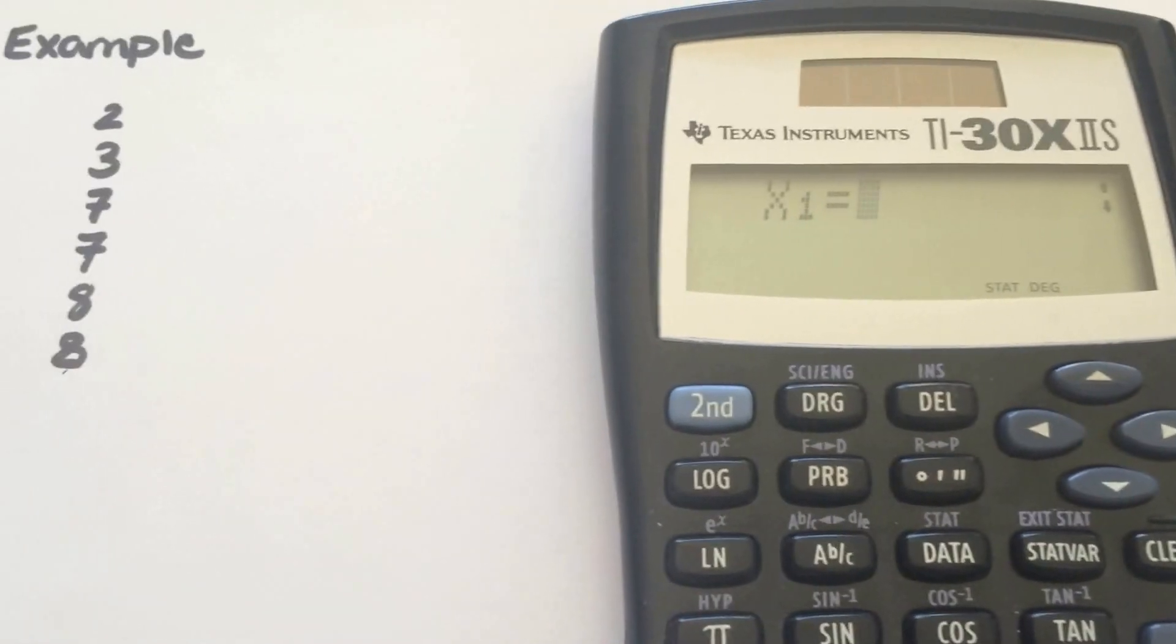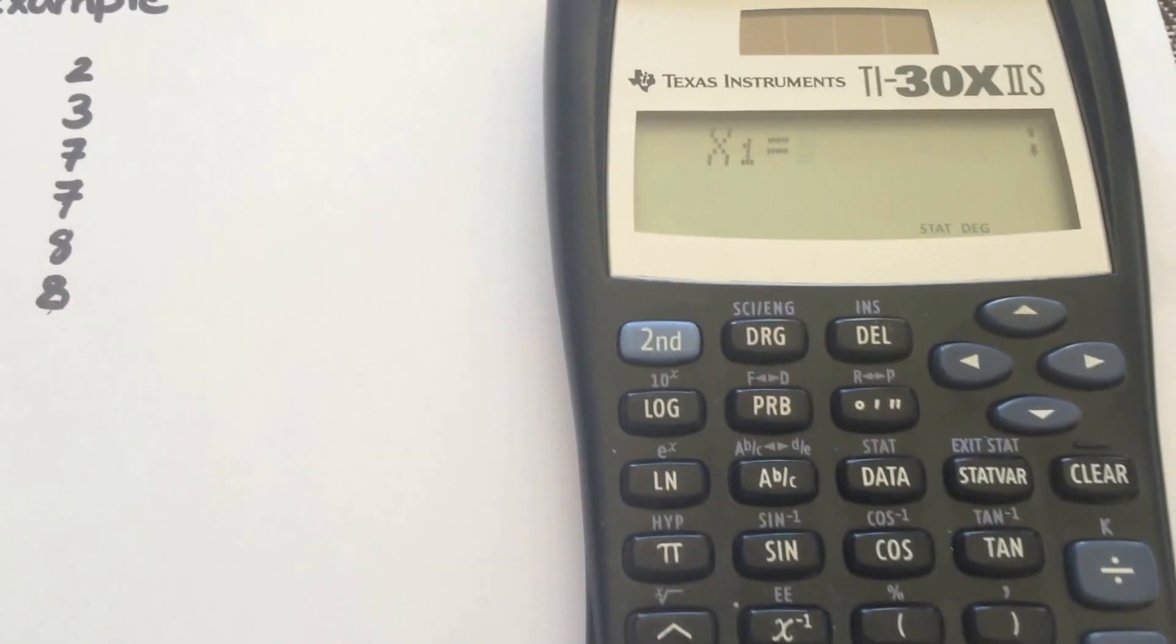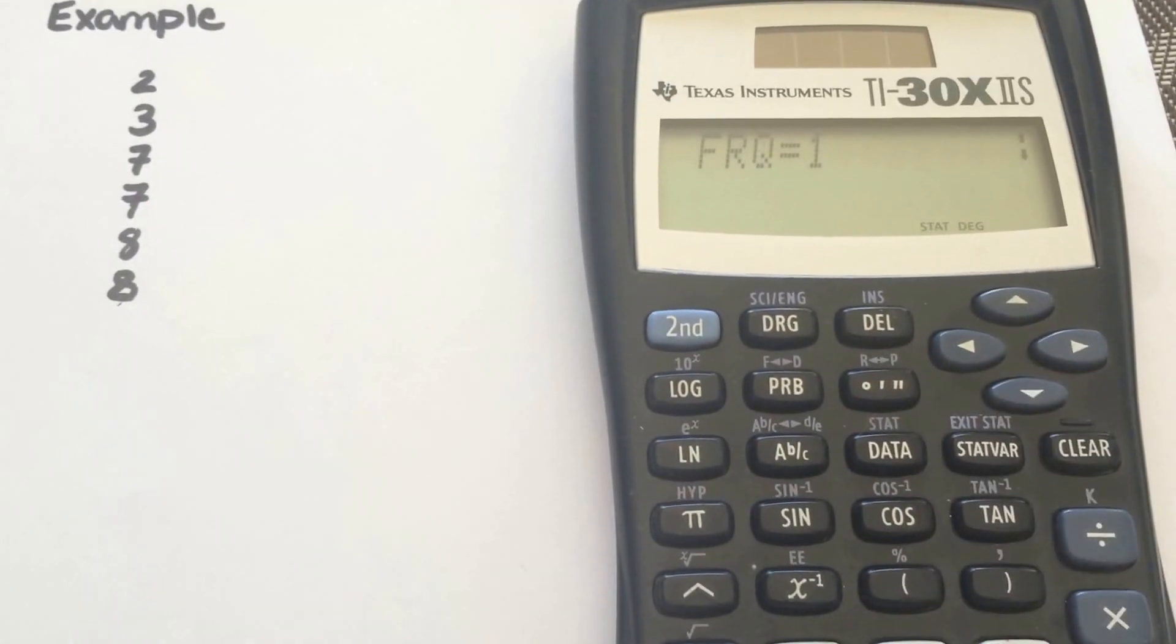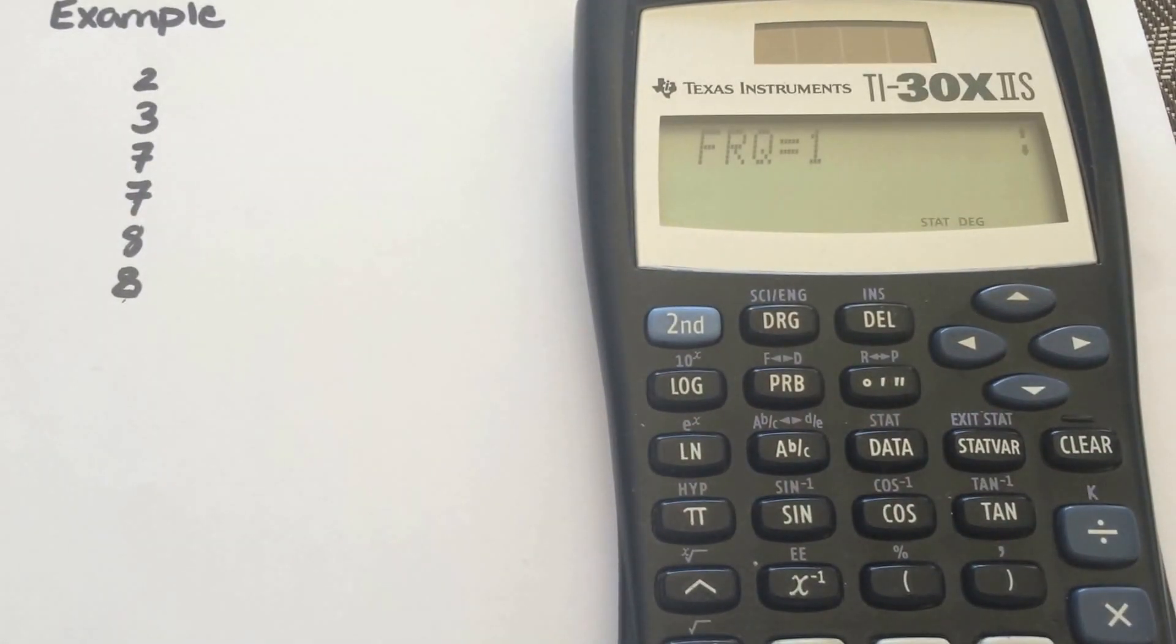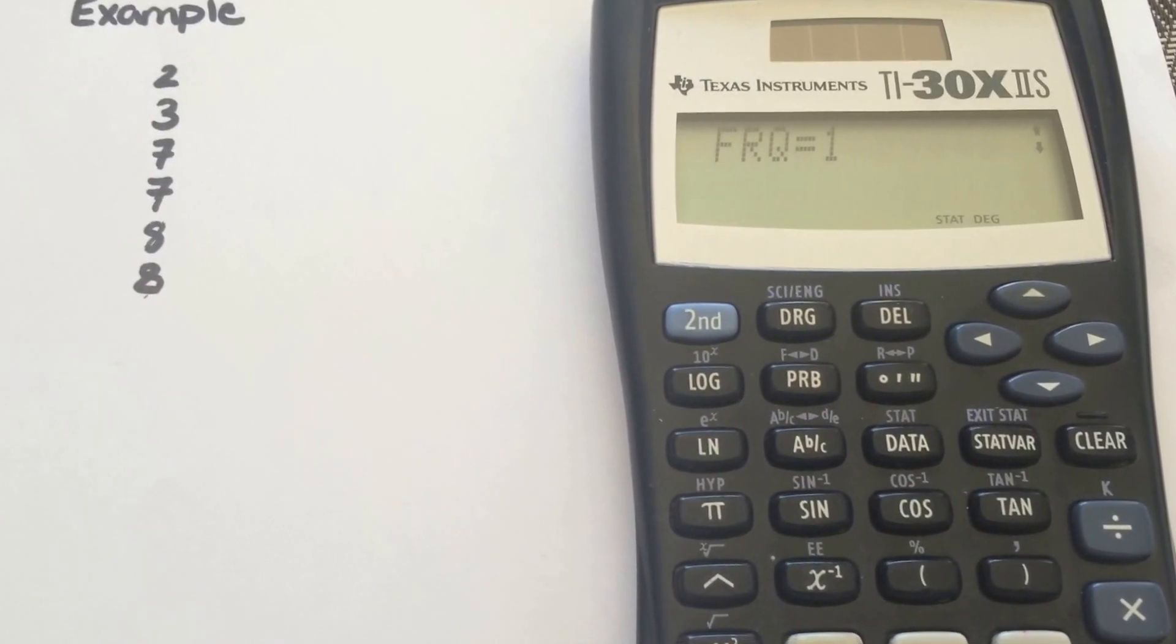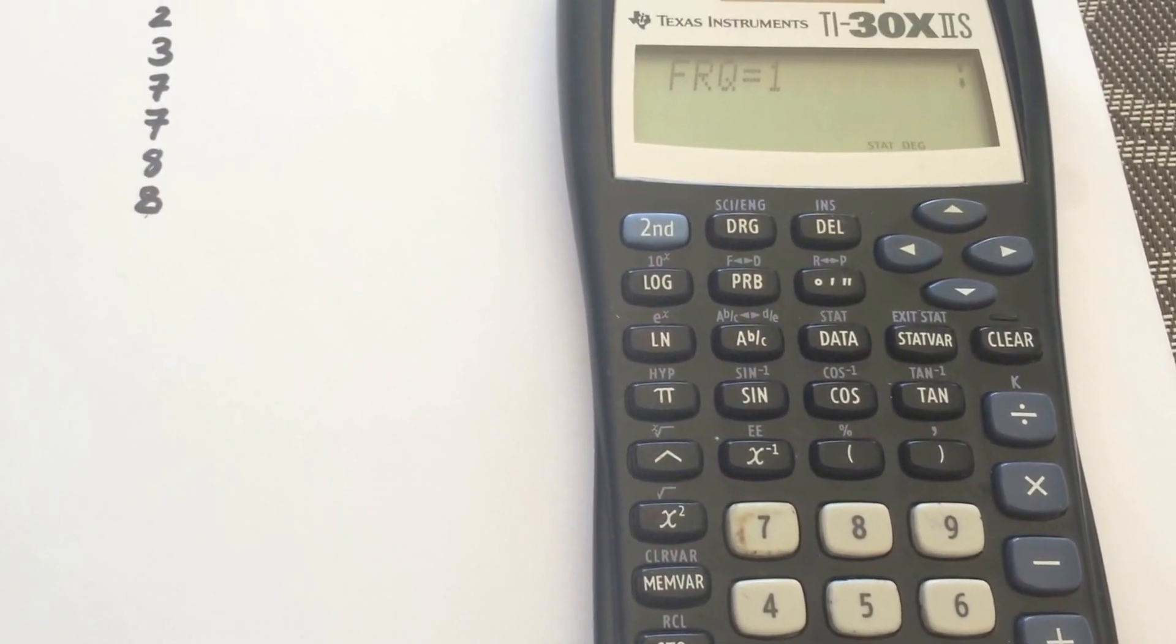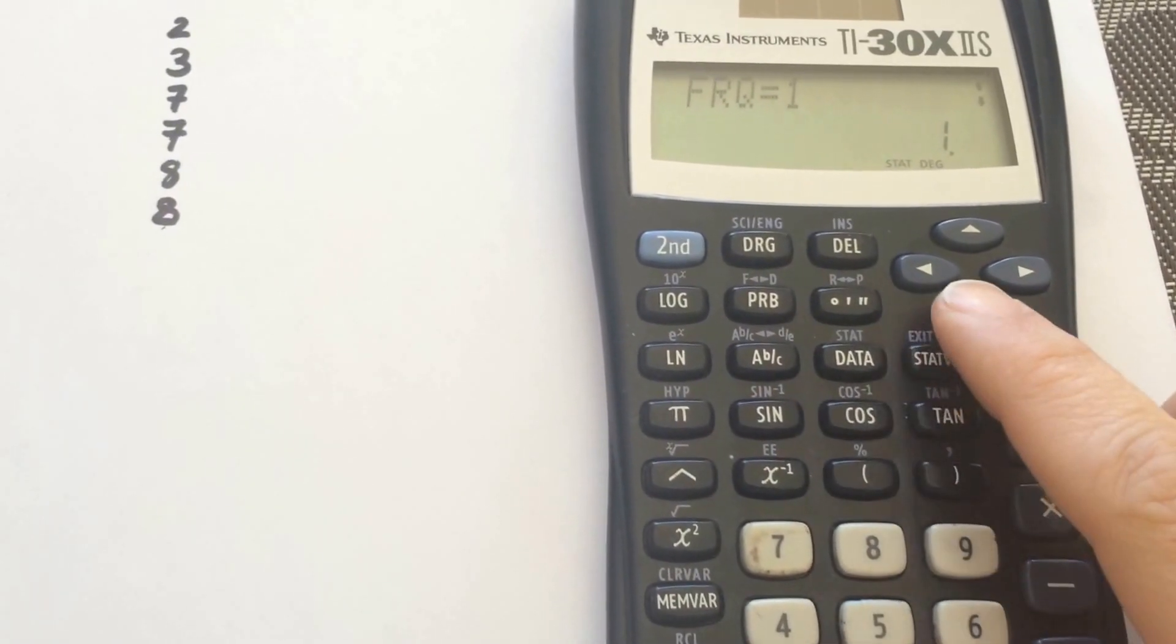It's going to ask for your data value. So the first value is 2. You're going to enter 2, and then scroll down. It's going to ask for how many 2s you have. So you're going to select 1, because I only have one 2. Hit equals.